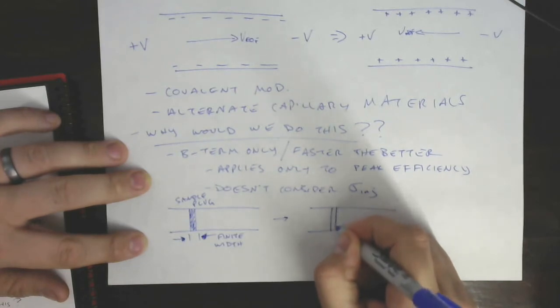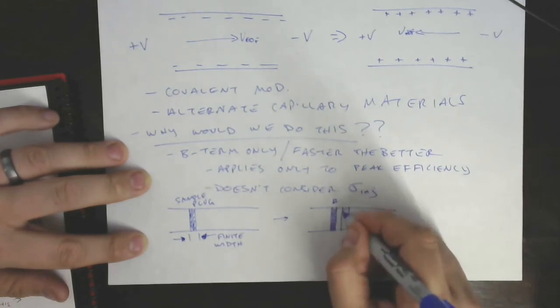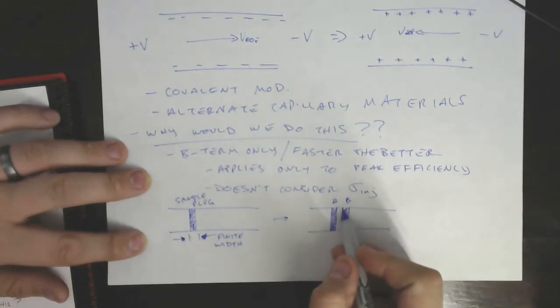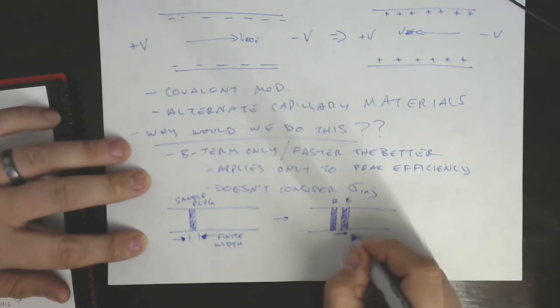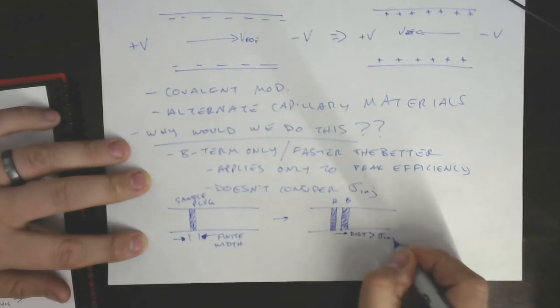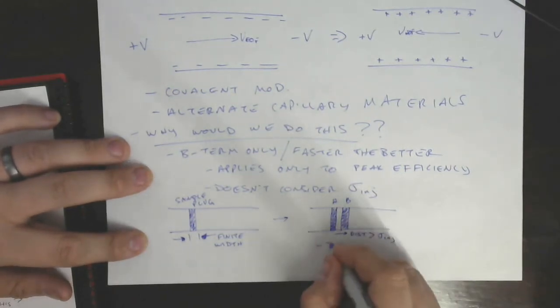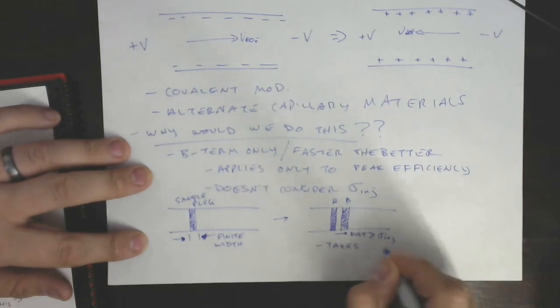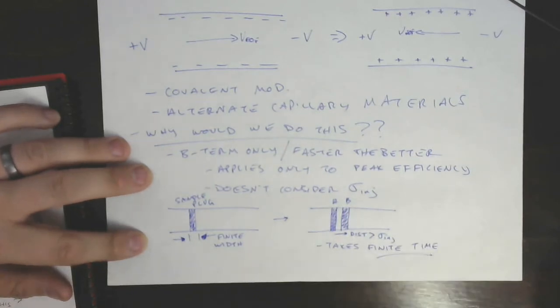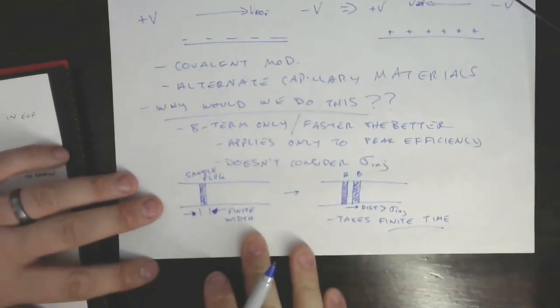So let's call this A and let's call this B. In order to get two separate bands like this, B has to have traveled a distance greater than, so let's call this distance greater than the size of that injected plug, right? And that takes a finite amount of time. Takes a finite amount of time. We can't really just go infinitely fast to get these things to separate from each other.